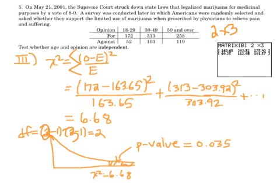Here's the chi-squared distribution. Notice that for so few degrees of freedom, it's really, really skewed. We get a chi-squared value of 6.68 with a p-value of about 3.5%.